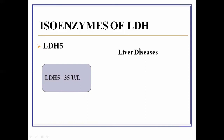Elevated LDH5 is an indication of liver disease, most specifically hepatitis and jaundice. It also indicates muscle diseases, most specifically muscle destruction.